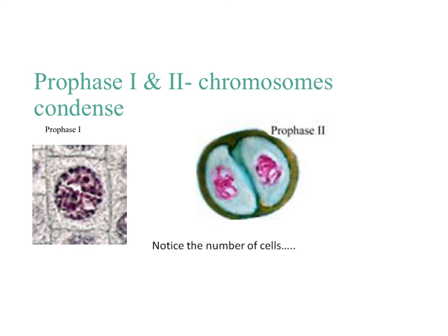The next phase is prophase 1. After the cell goes through meiosis 1, it goes back and goes through meiosis 2, and it happens in the same event, so I have prophase 1 and prophase 2 together. The overall thing that happens at this stage is the chromosomes condense — you need to note chromosomes condense in both prophase 1 and prophase 2. In prophase 1, you should only be seeing one cell, and in prophase 2, you should be seeing two cells.